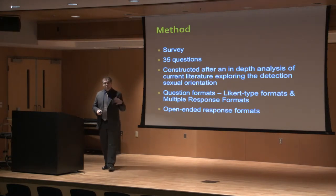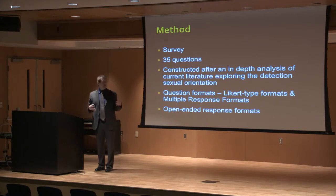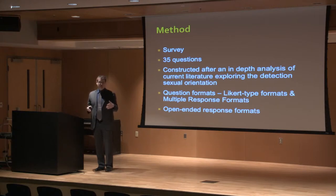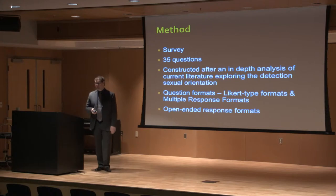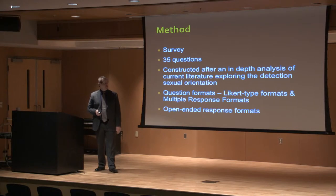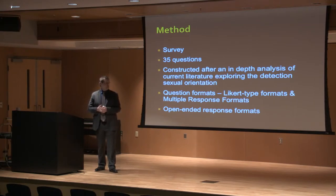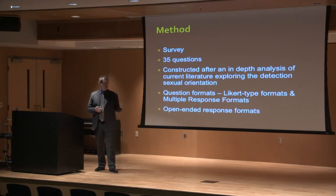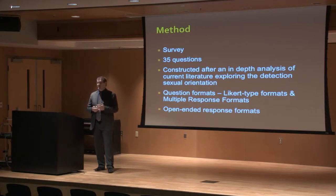The method this study draws upon was a survey method, though the larger project uses both self-reports and in-depth interviews to triangulate the data. Today we're focusing simply on the questionnaires and their results. The questionnaires consisted of 35 different questions constructed after an in-depth analysis of current literature exploring the detection of sexual orientation. The question formats consisted of Likert-type formats, multiple response formats, and open-ended response formats.